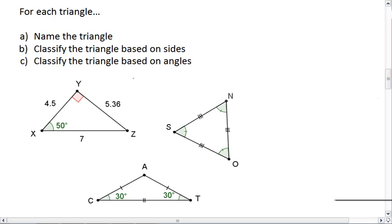For the first triangle, one possible name would be triangle XYZ. This triangle, first we want based on sides. This triangle has three different sides, so it is a scalene triangle.